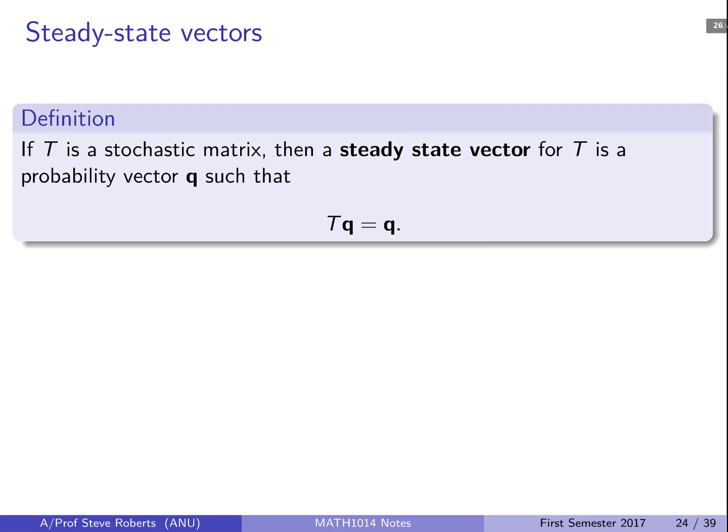So this leads on to the very important definition of a steady state vector. So for a stochastic matrix T, a steady state vector for T is a probability vector Q such that T times Q is equal to Q. So T operating on this steady state vector remains steady, it stays the same.